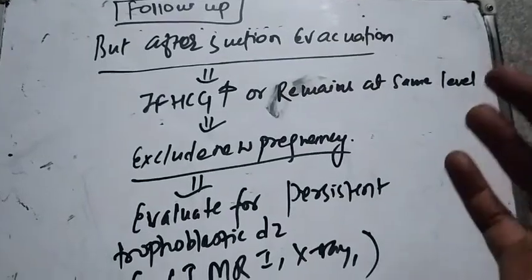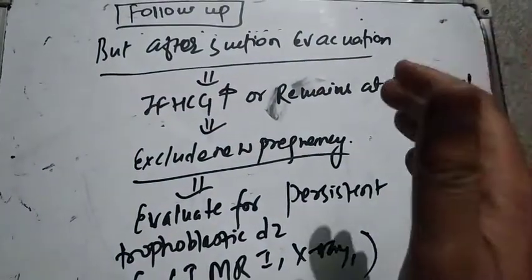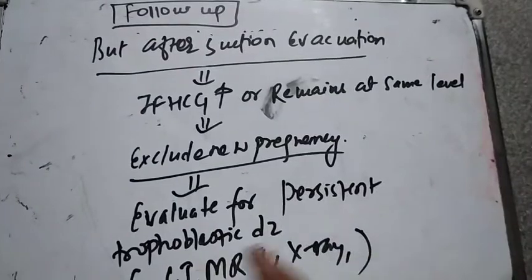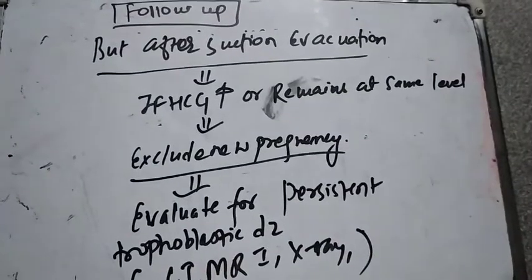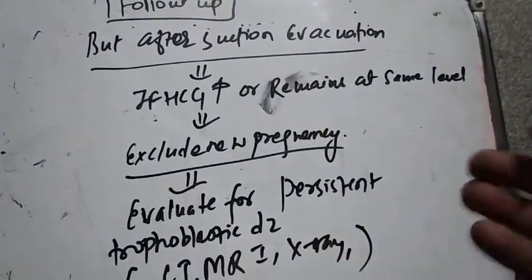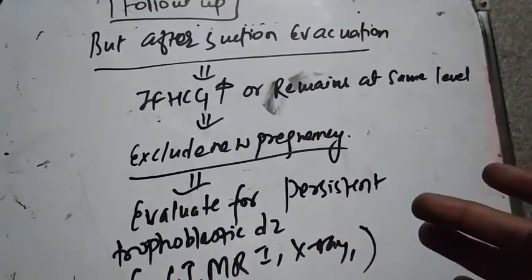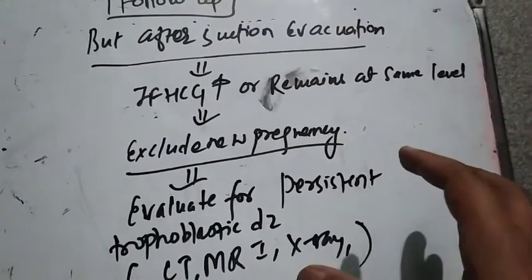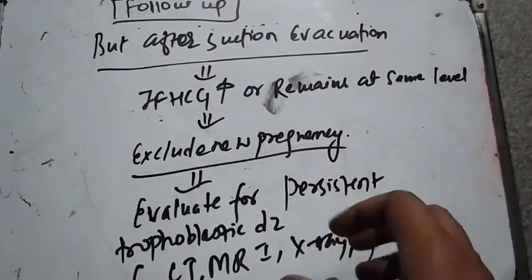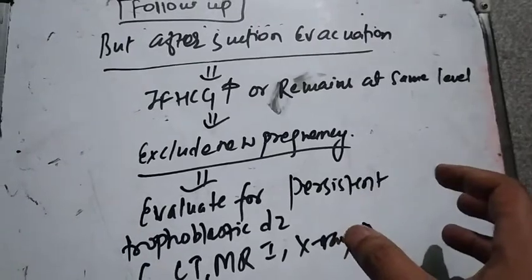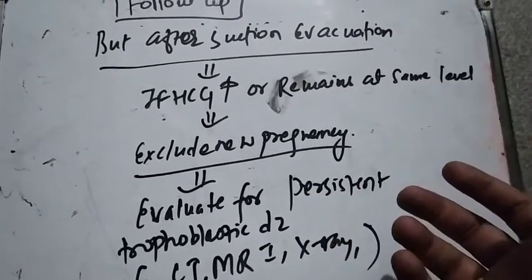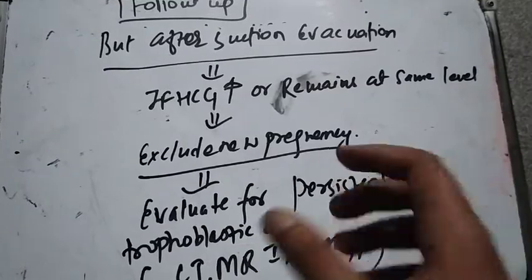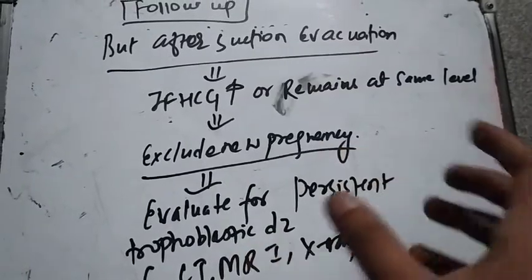If there is still persistent trophoblastic disease, we need to do a CT scan, MRI, and X-ray of the brain and pelvis — all imaging modalities are performed.